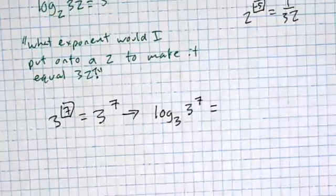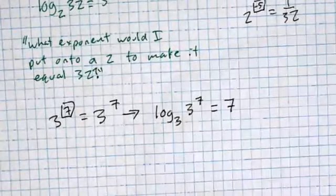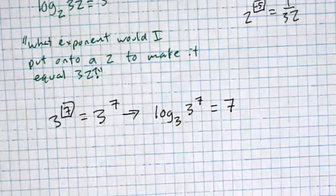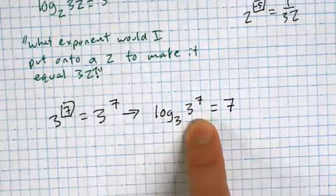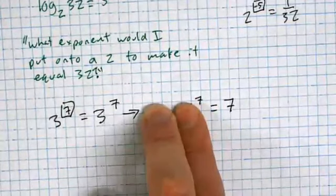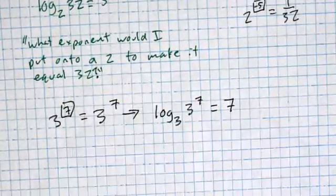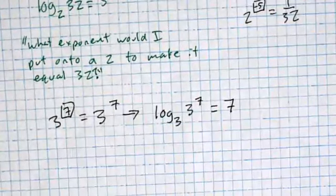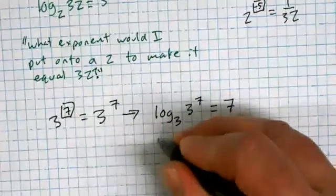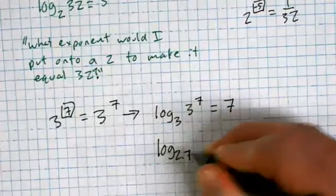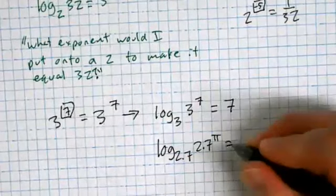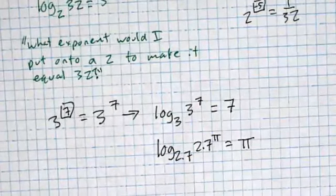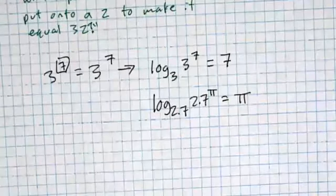The corollary in log notation: log base three of three to the seven is seven. If you have an exponential inside a log where the base of the log and the base of the exponential match, they essentially cancel each other out. This is handy for weird problems — for example, log base 2.7 of 2.7 to the pi power, and the answer is pi.